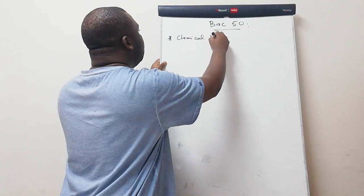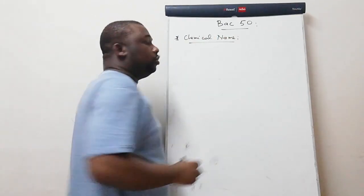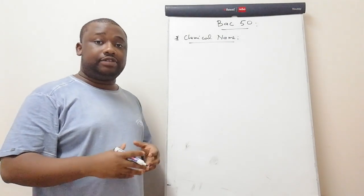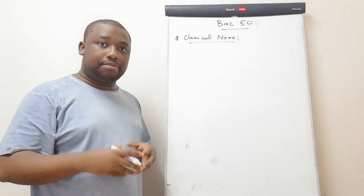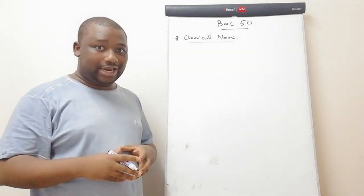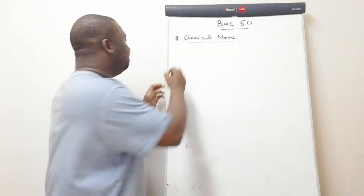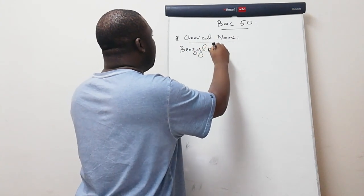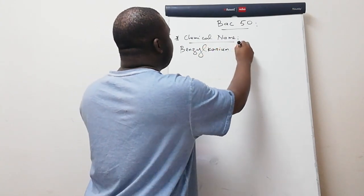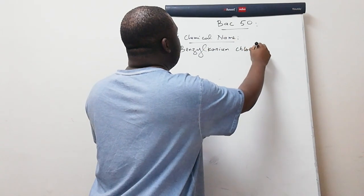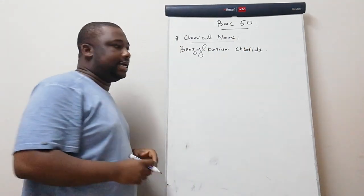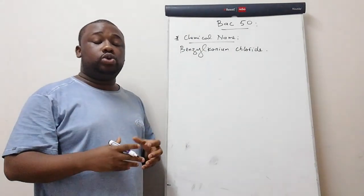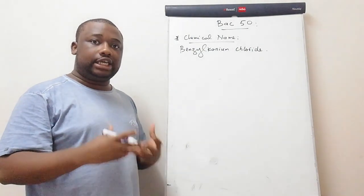So what is the chemical name of BAC 50? The chemical name of BAC 50 is benzalkonium chloride — quite a long name. Let's write this down: the chemical name is benzalkonium chloride.